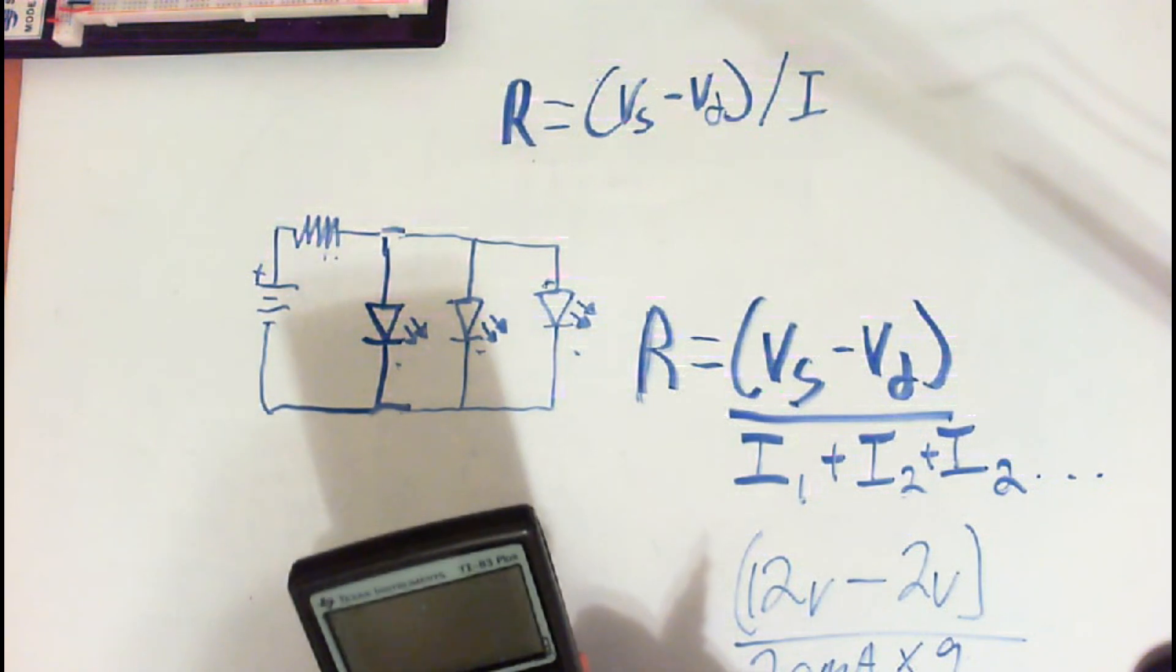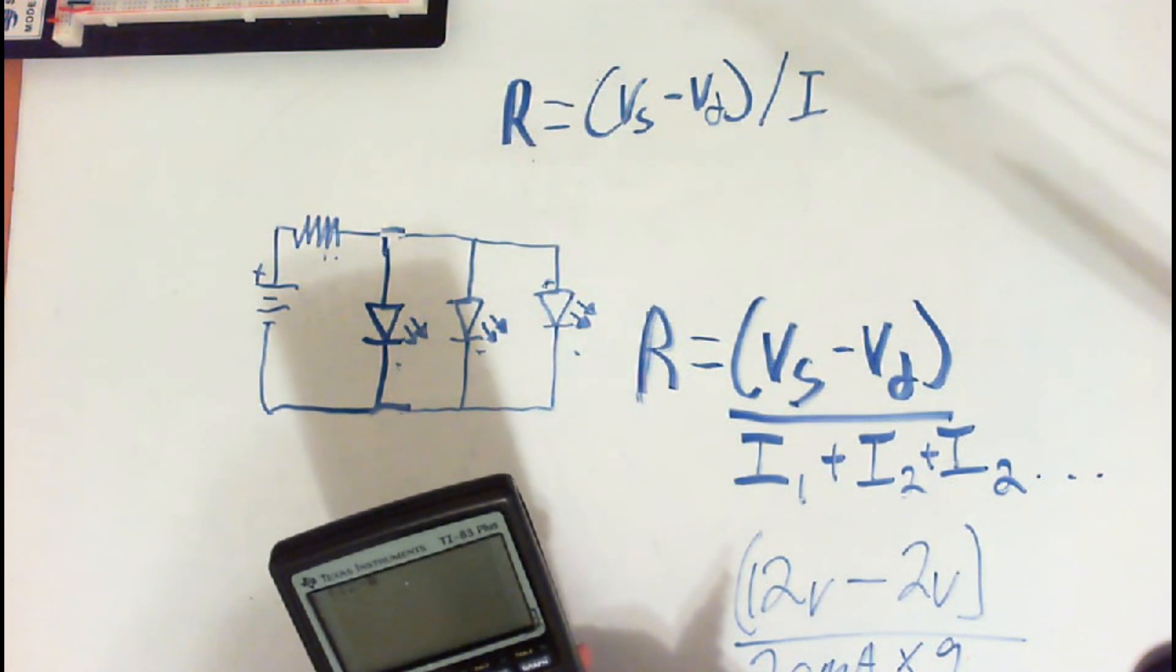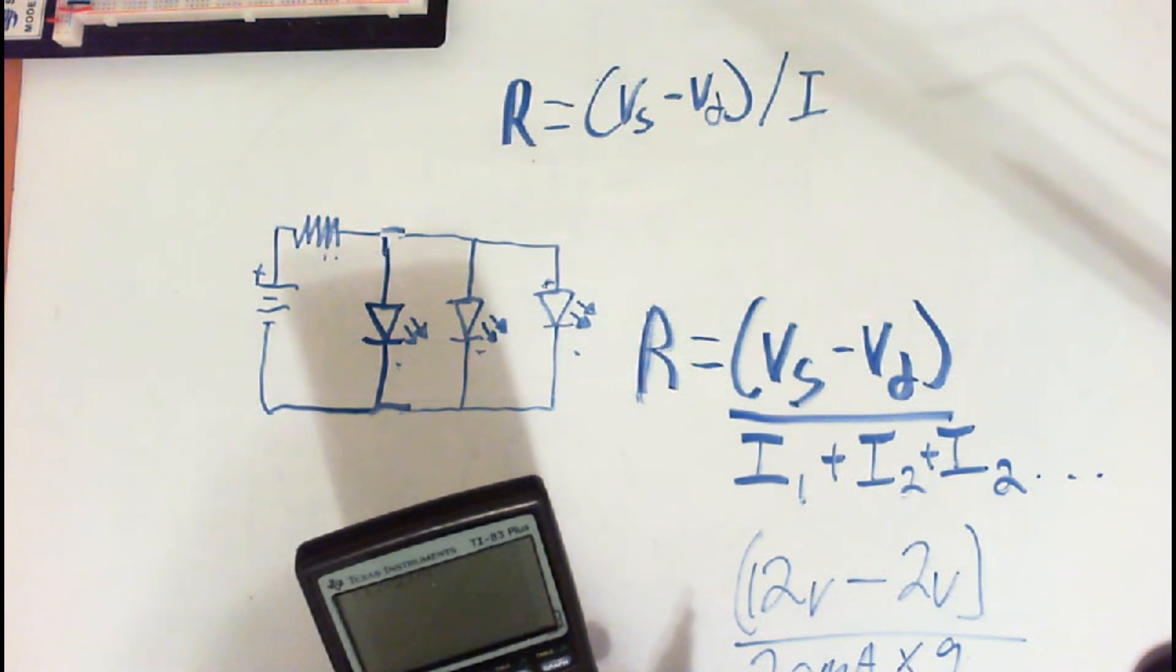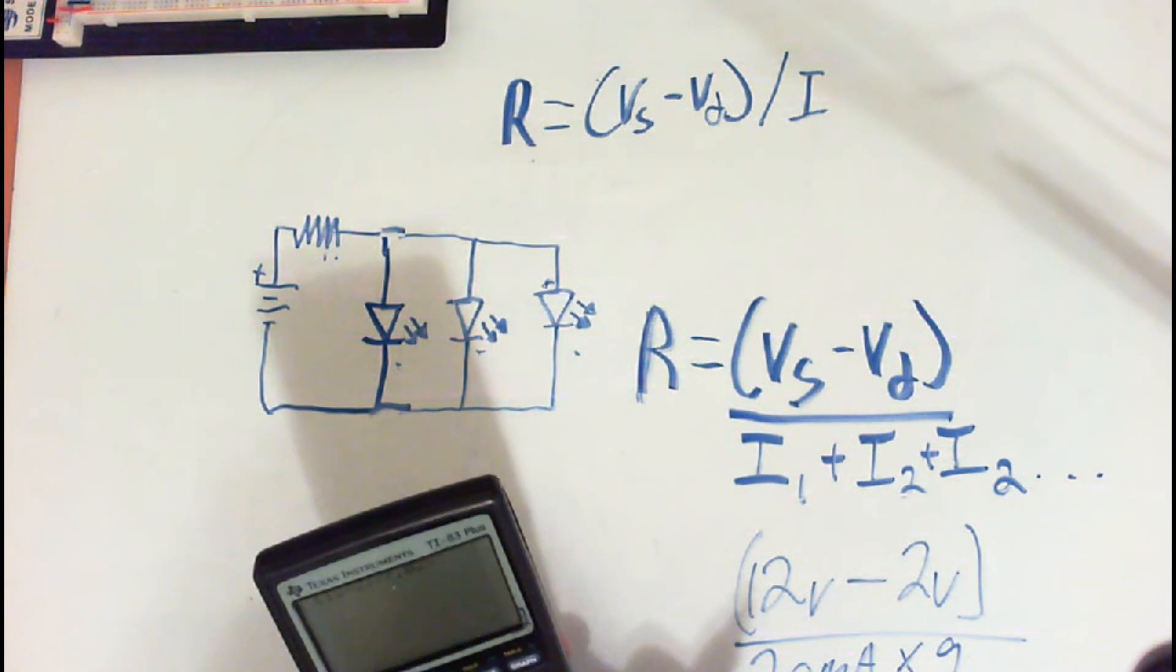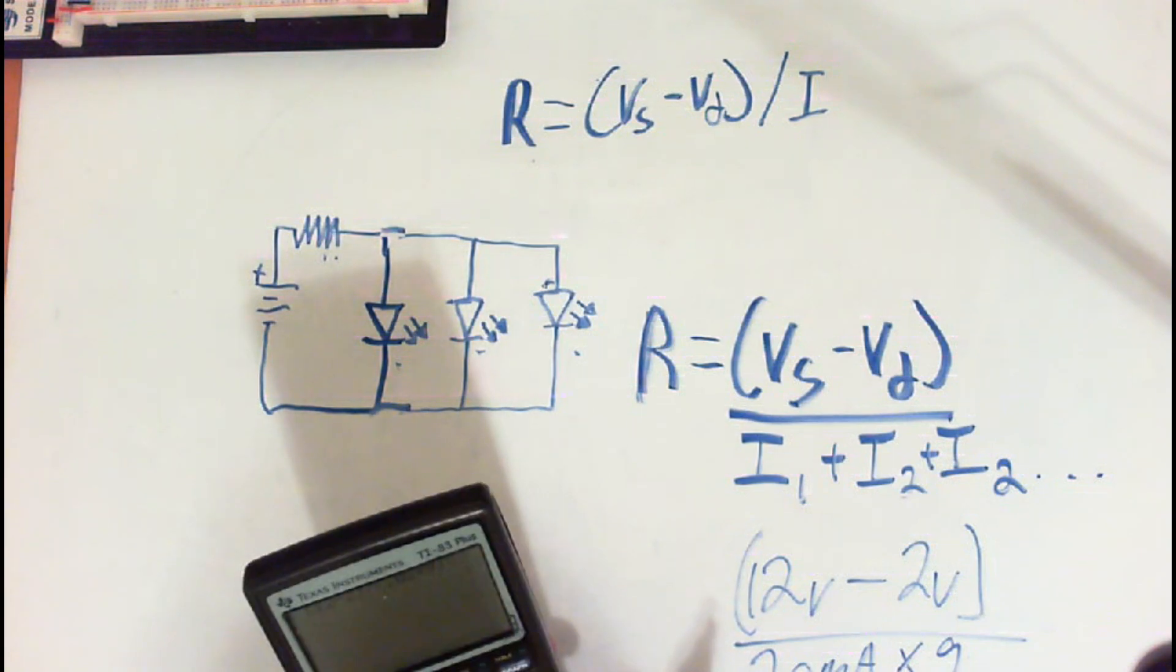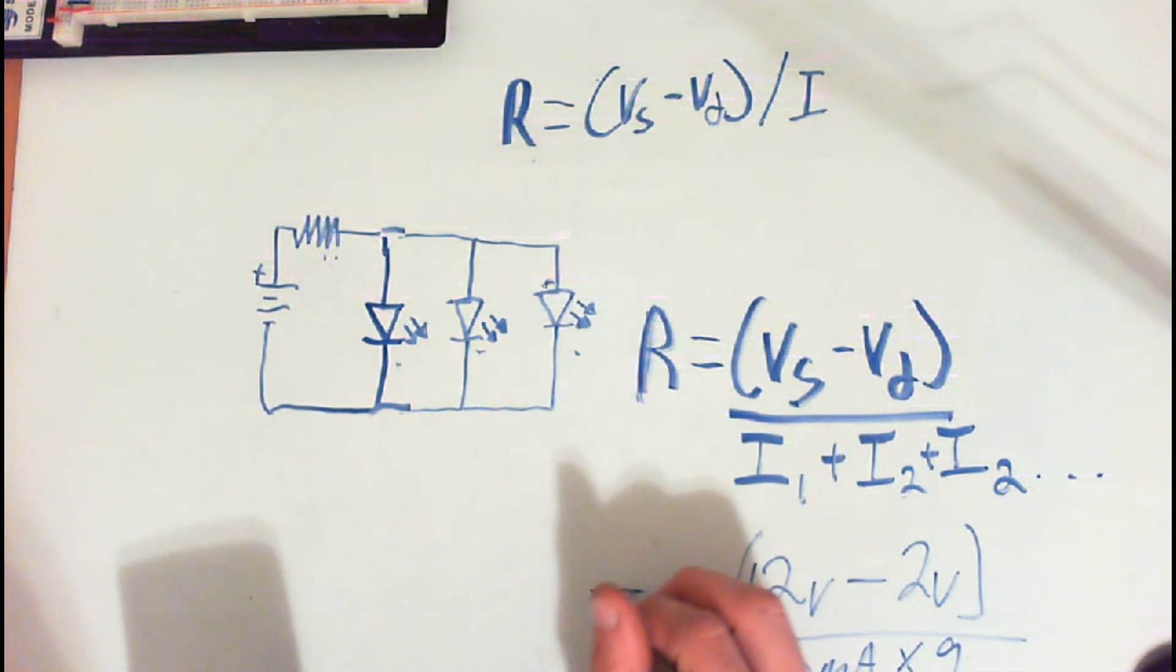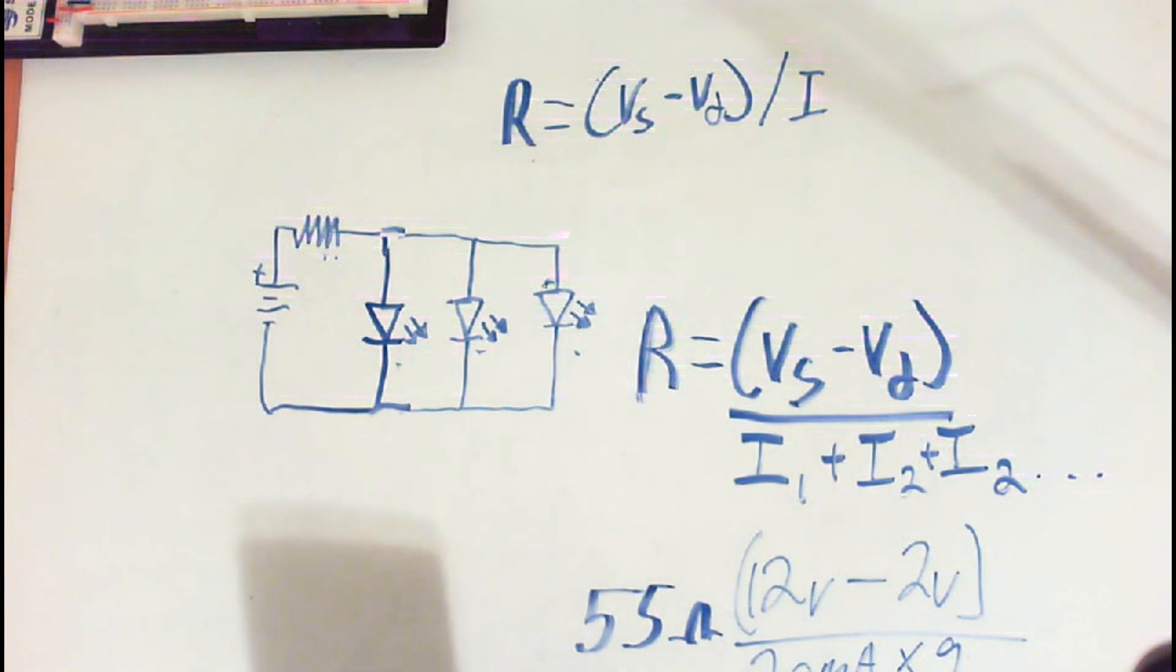So let's go ahead and figure out what that is. 12 subtract 2 equals 10, divided by 0.02 times 9, close parentheses. And our resistor value would be 55 ohms. And it's okay to go a little higher than that, or even, but you don't want to go any lower than that value.